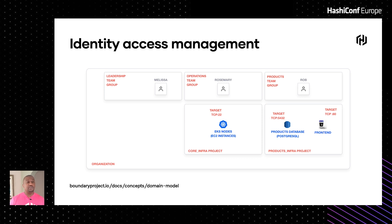The product team has different access permissions: they need to access PostgreSQL and also the front-end API on port 80, so they have the permissions to do that. The leadership group is read-only — they don't have any direct session access; they just need visibility into what's going on.